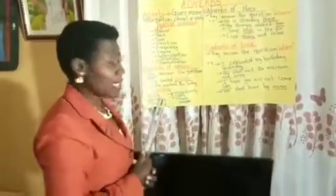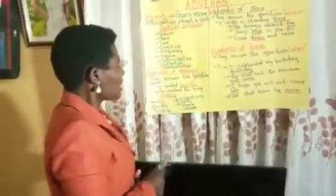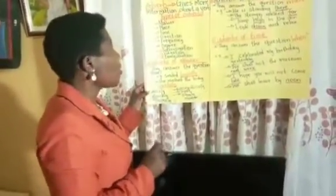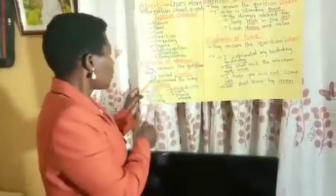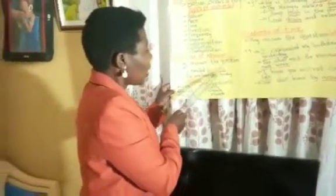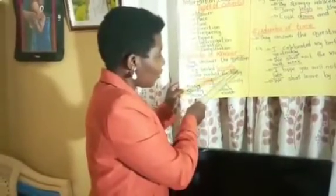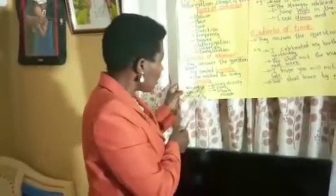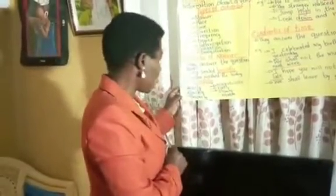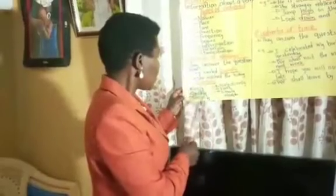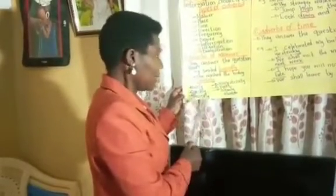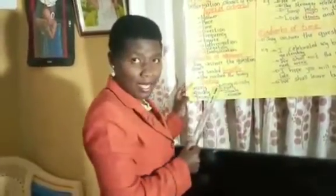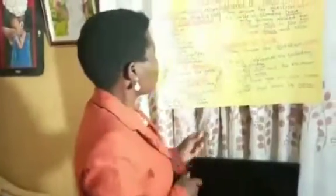Adverbs of manner — what are they? These are adverbs that answer the question: how? How was something done? How was a verb done? For example, he smiled — how? Broadly. This is an adverb of manner. She washed the baby carefully. 'Carefully' is an adverb of manner. Other examples could be nicely, quickly, properly, majestically, fast, slowly, among many others.